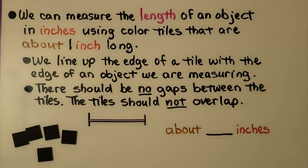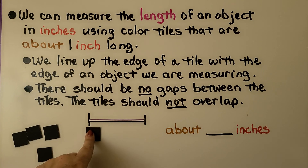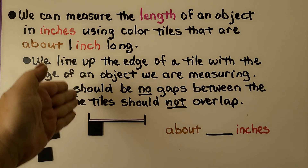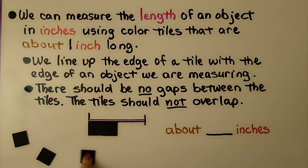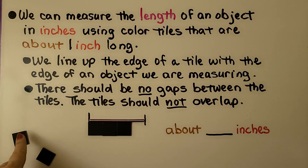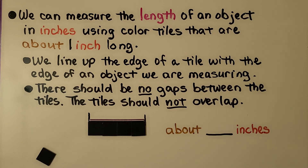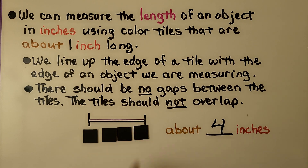We can measure the length of an object in inches using color tiles that are about one inch long. We line up the edge of a tile with the edge of the object we are measuring, right along the edge. There should be no gaps or overlaps — they should be right next to each other. We used four tiles, so we can say that stick was about four inches.